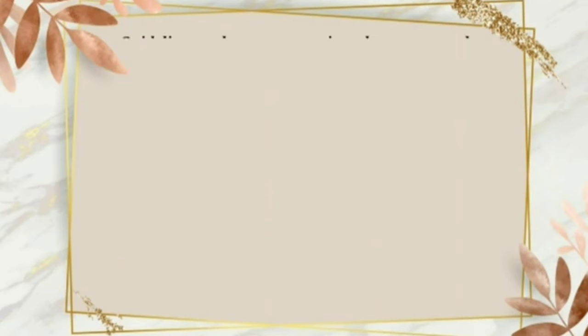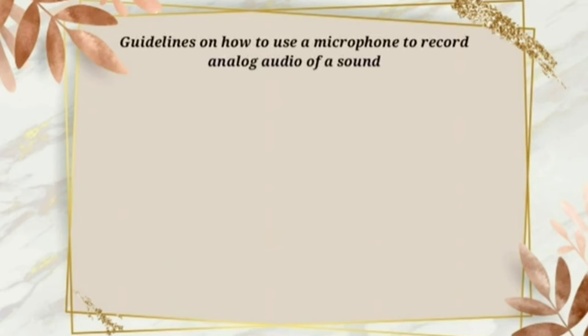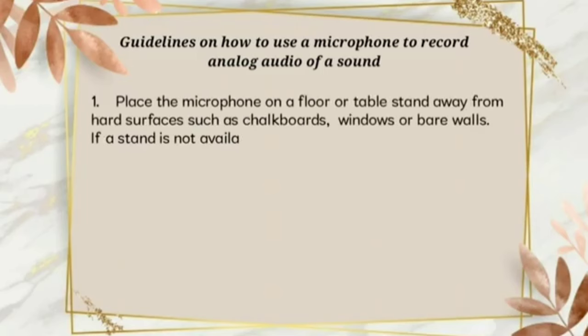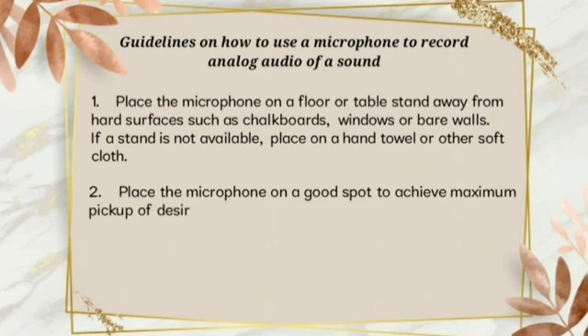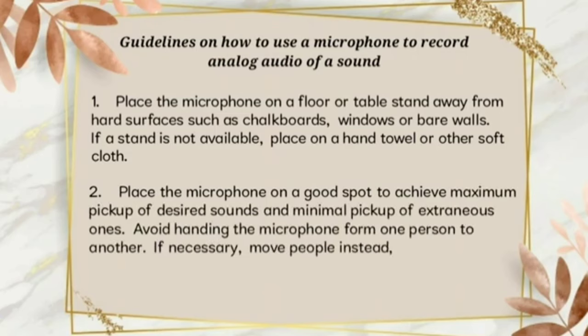And now, here are the guidelines on how to use a microphone to record analog audio of a sound. First, place the microphone on a floor or table stand away from hard surfaces such as chalkboards, windows, or bare walls. If a stand is not available, place on a hand towel or other soft cloth. Second, place the microphone on a good spot to achieve maximum pickup of desired sounds and minimal pickup of extraneous ones. Avoid handling the microphone from one person to another. If necessary, move people instead before recording.